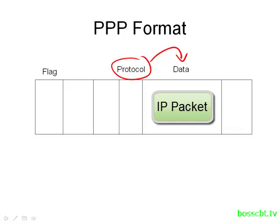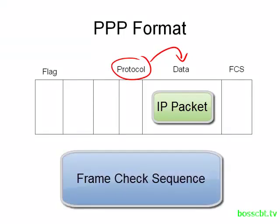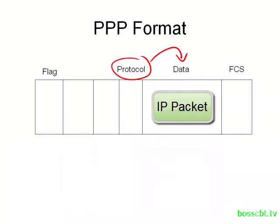The data field contains one of the Layer 3 protocols. And then at the end we have the frame check sequence, which is used to detect errors. We came across the frame check sequence in other Layer 2 data link protocols like Ethernet — the concept is the same here.